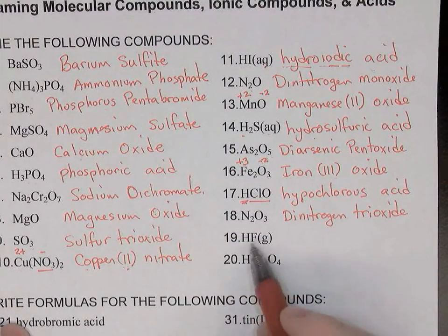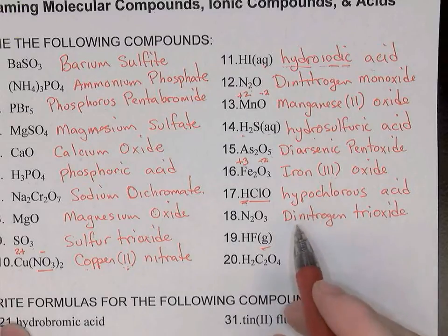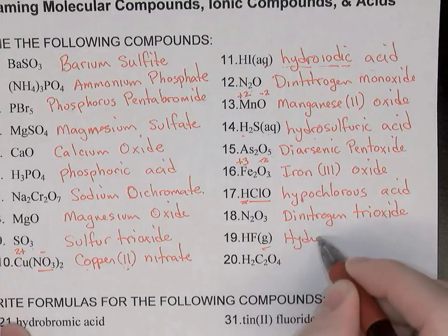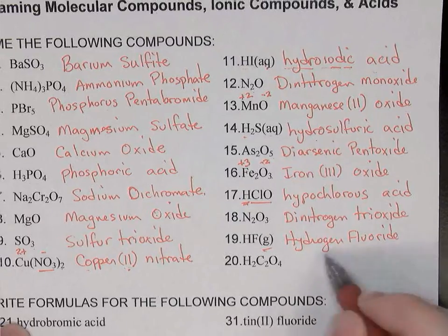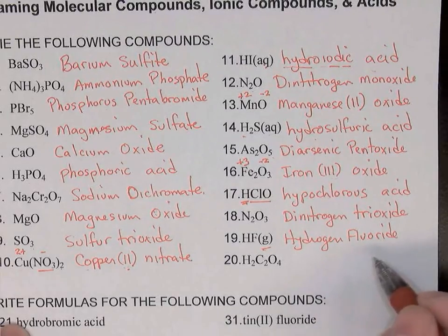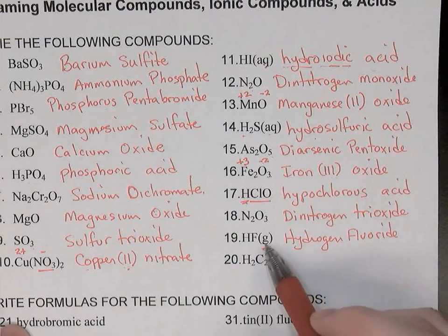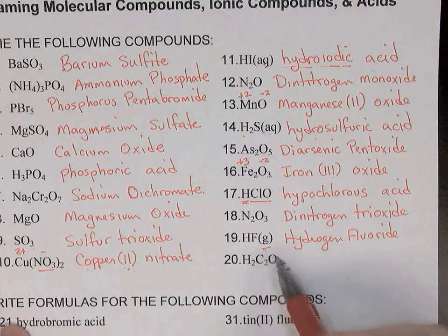HF: I'm tempted to say that this is a binary acid, but then I notice the gas designation. So I'm going to name this not as an acid but as a gas, and its name will simply be hydrogen fluoride. We would also accept hydrogen monofluoride, but it would most often be called just hydrogen fluoride. If this were aqueous, dissolved in water, we would name it as an acid: hydrofluoric acid.